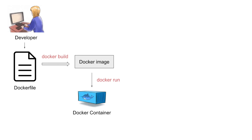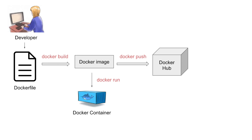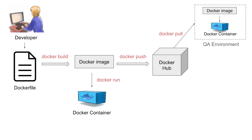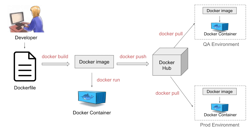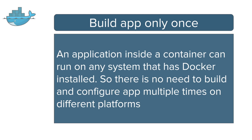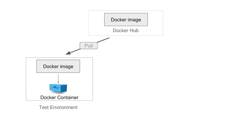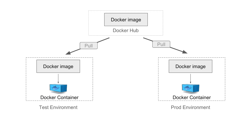We can also push our Docker image to any repository like Docker Hub. Docker Hub is the Docker cloud repository where we can push our images, or use any other registry as well. From that registry, we can pull the image and create a Docker container on any environment — a QA environment or a production environment — and be sure that our application is going to work in exactly the same way. This is one of the main advantages of Docker: build it once and deploy it on multiple platforms using Docker containers.